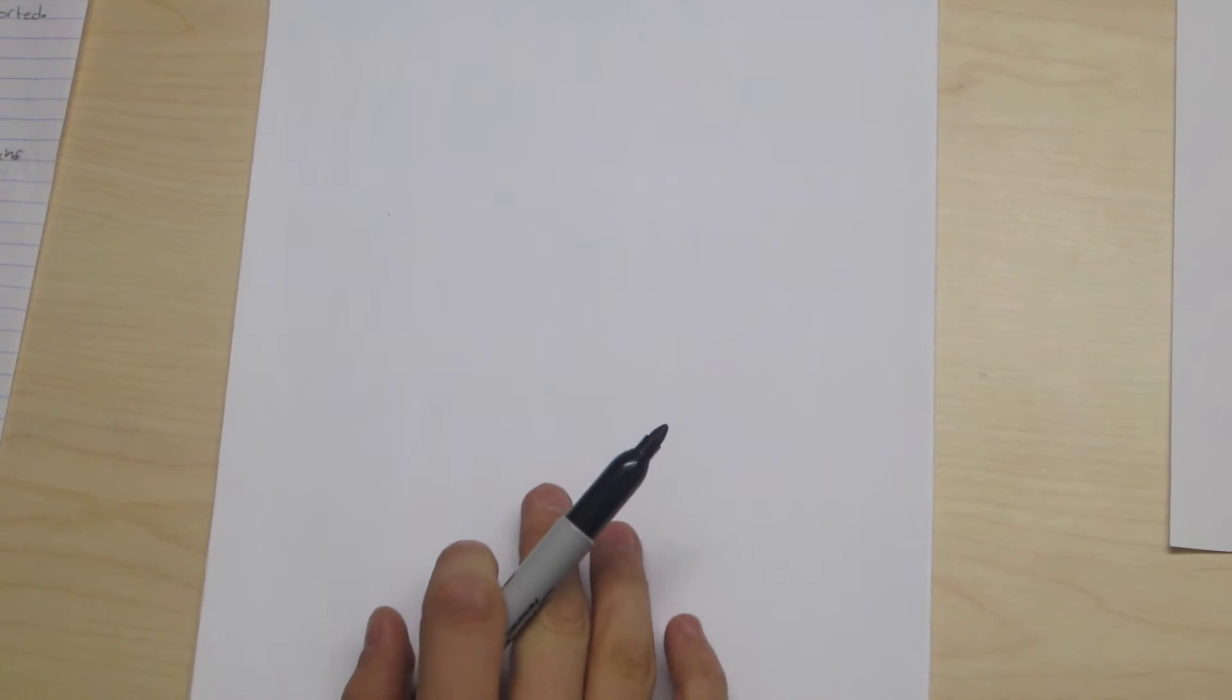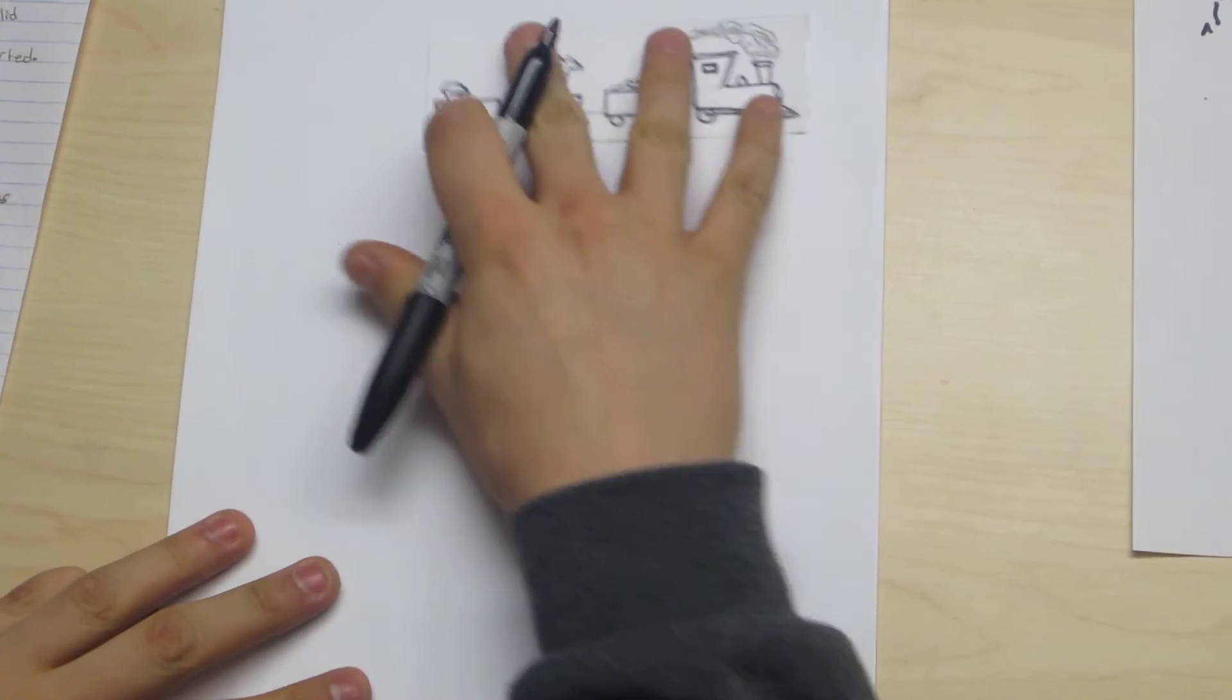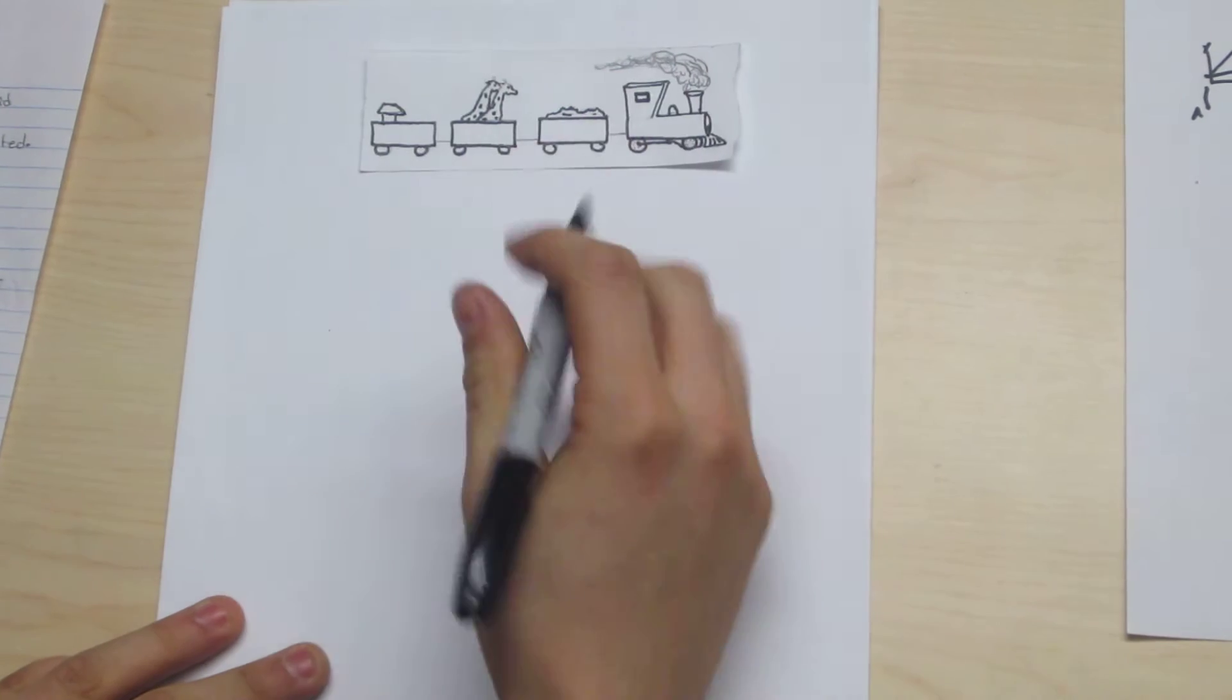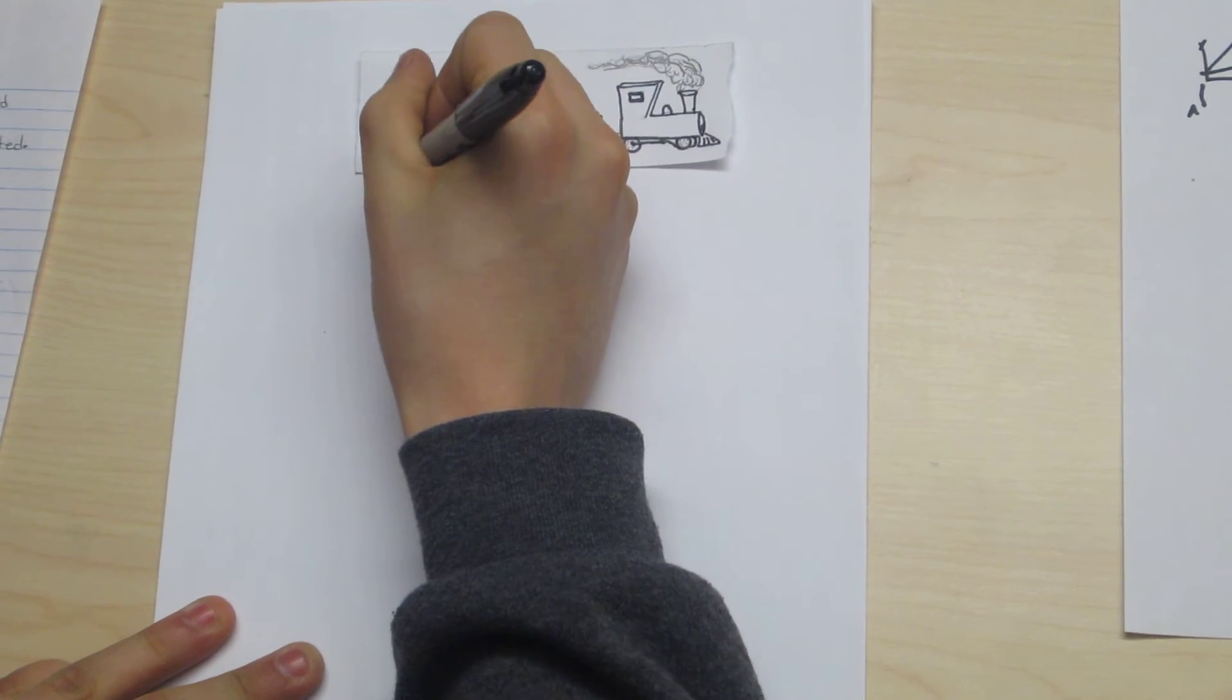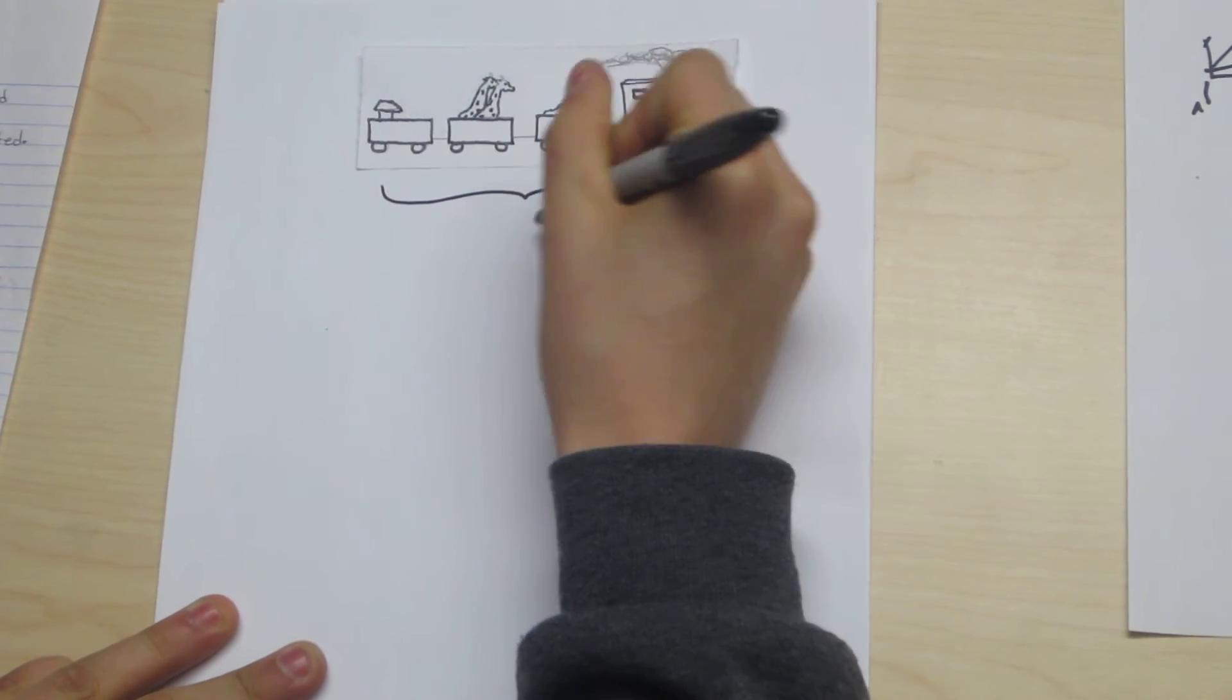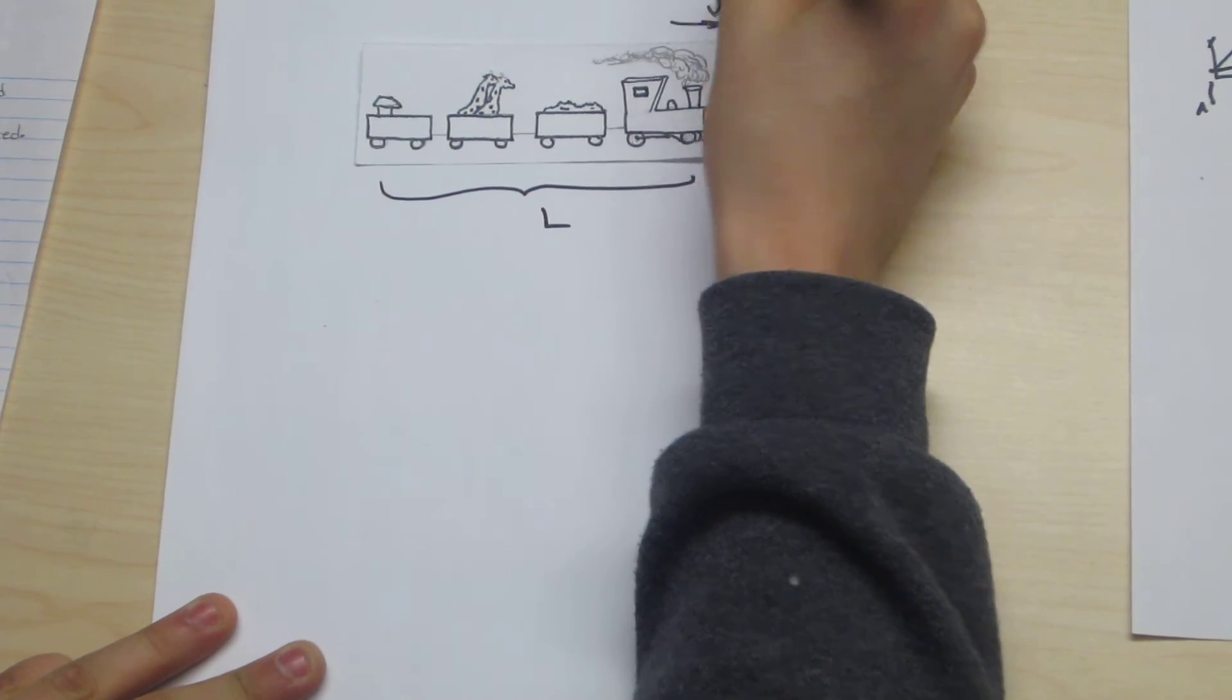So we imagine a train. I'm just going to draw a train. There we go.